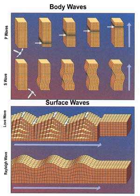Rayleigh waves, also called ground roll, are surface waves that travel as ripples with motions similar to those of waves on the surface of water. The associated particle motion at shallow depths is retrograde, and the restoring force in Rayleigh and other seismic waves is elastic, not gravitational as for water waves. The existence of these waves was predicted by John William Strutt, Lord Rayleigh, in 1885. They are slower than body waves, roughly 90% of the velocity of S waves for typical homogeneous elastic media. In a layered medium, the velocity of the Rayleigh waves depends on their frequency and wavelength.